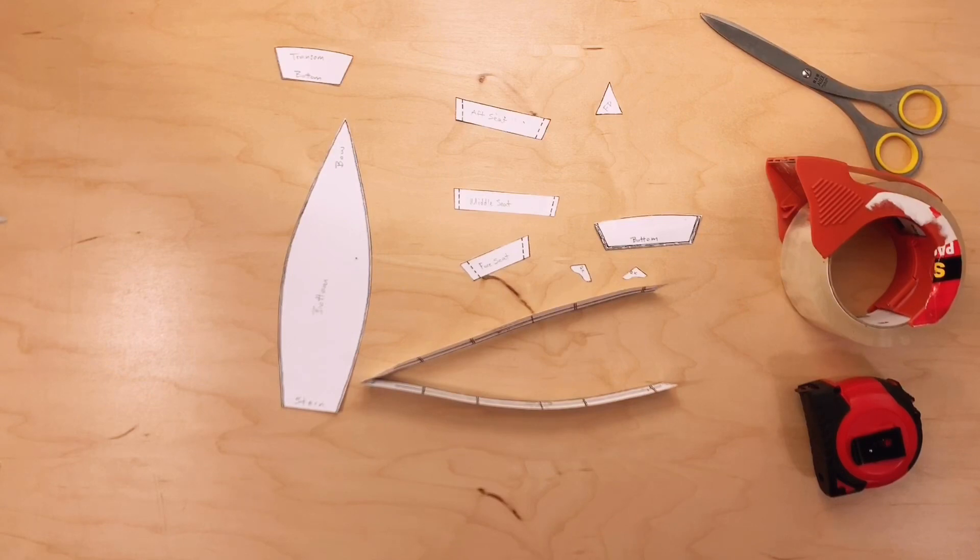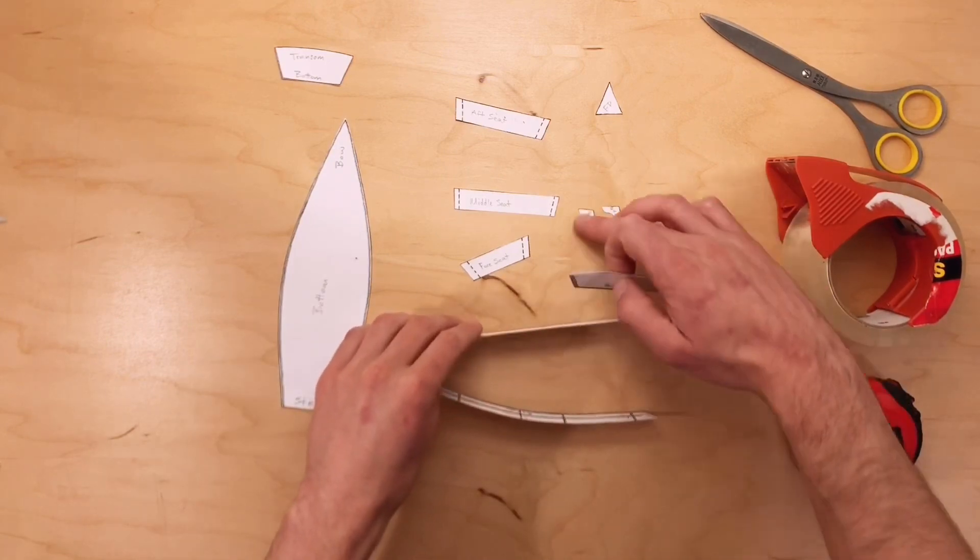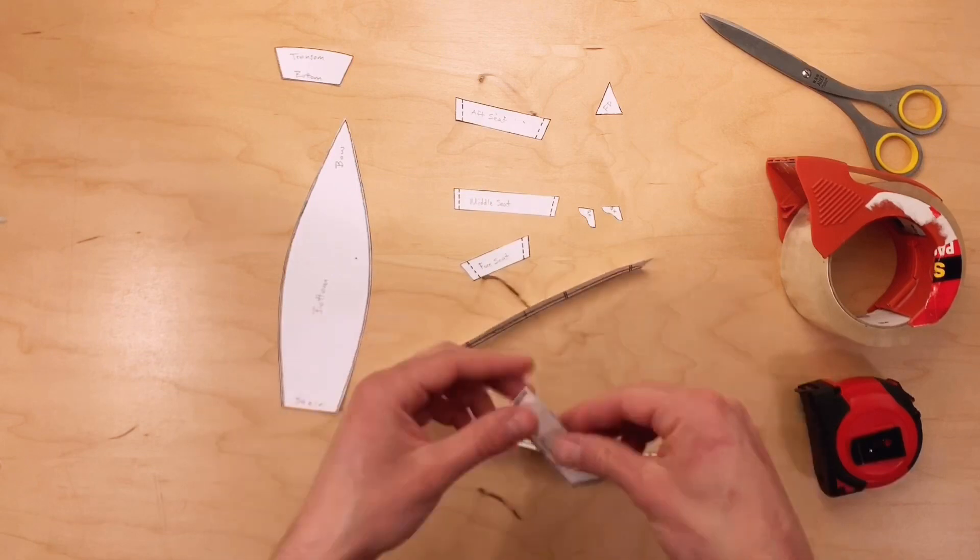Once the sides are attached, we can see the shape of the boat coming together. Next, we're going to install the center frame at the lines that we drew earlier.